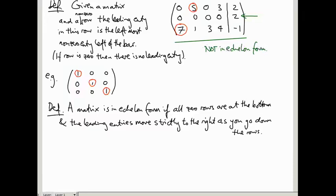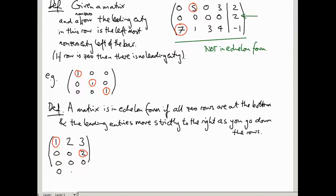The identity matrix is in echelon form: there are no zero rows so that condition is trivially satisfied, and the leading entries move to the right. Another example in echelon form is the matrix (1, 2, 3 | 0, 0, 2 | 0, 0, 0): the leading entries are 1 and 2 moving to the right, and the zero row is at the bottom. You can have more zero rows as long as they're all stacked at the bottom.